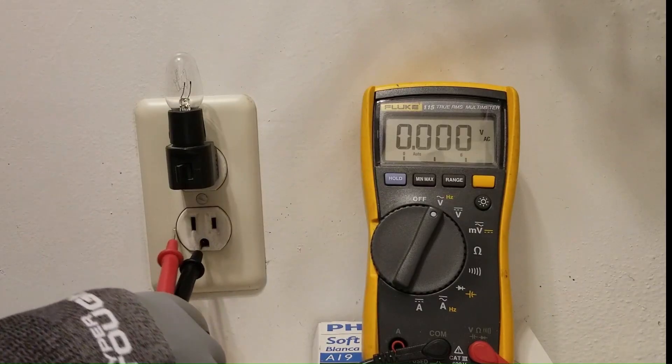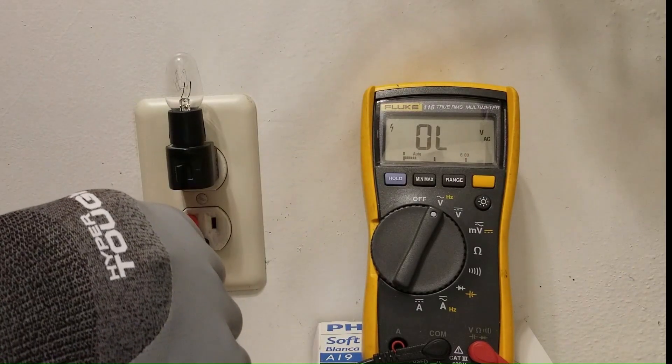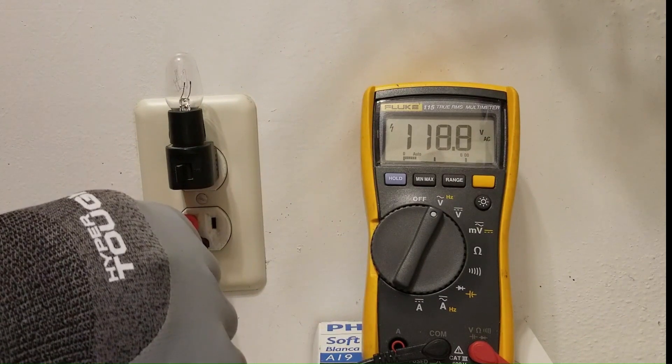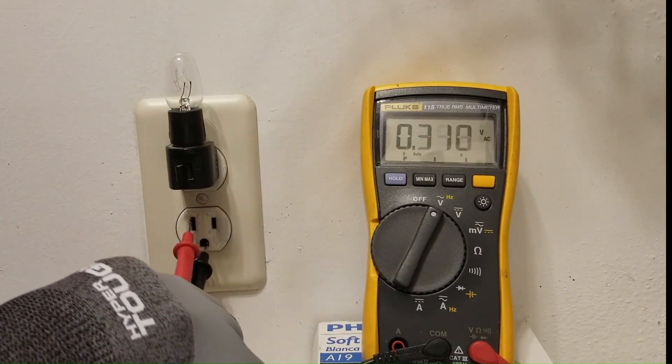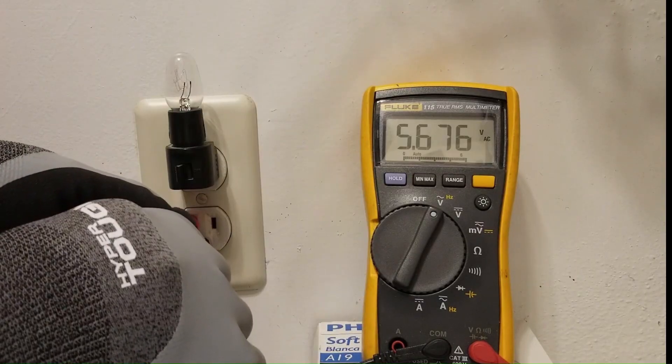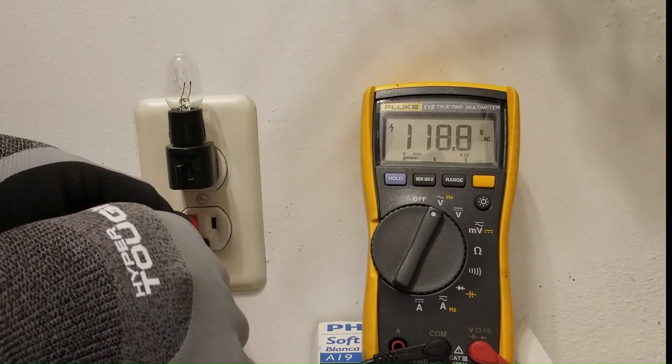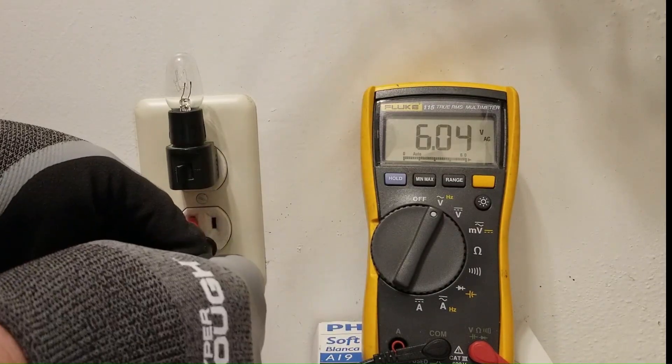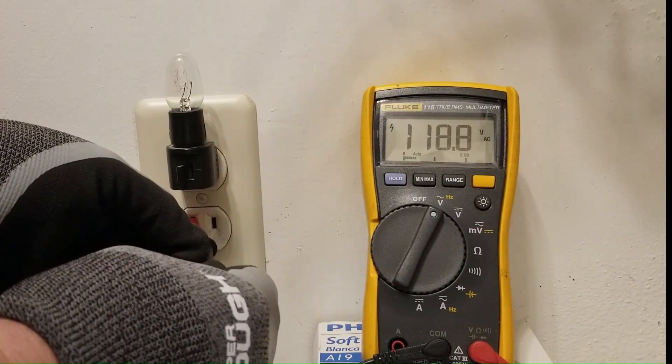So what we can do is we can put one lead into ground and one lead into neutral and it's showing 118 volts. So neutral is obviously way above the ground level, should not be up there. So that tells us we have a loose neutral right there. Neutral's reading 118 volts.